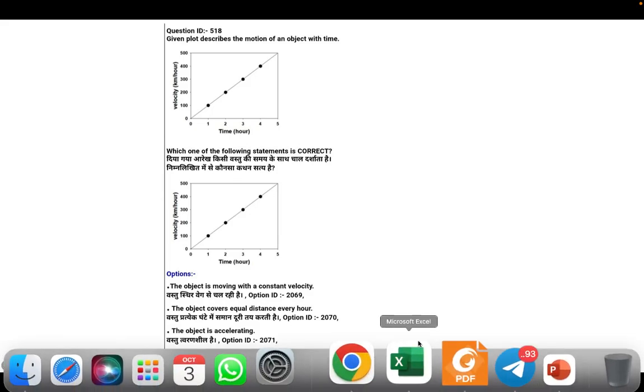Here we have a given plot describing the motion of an object with time. A student thinks that the fourth option is also correct. According to the official answer key, the third option is correct, but they think that the fourth option is also correct. So there are two correct options? Let me tell you this is wrong.